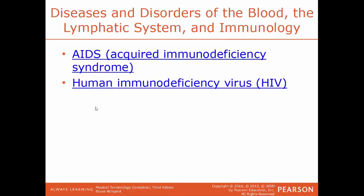Specific diseases of the blood, lymphatic, and immune systems: AIDS — acquired immune deficiency syndrome — is a serious infection where the immune system is severely compromised, making even small infections potentially fatal. It is caused by HIV, the human immunodeficiency virus. These two terms are not synonymous — HIV can lead to AIDS, but having HIV does not necessarily mean a person will develop AIDS.